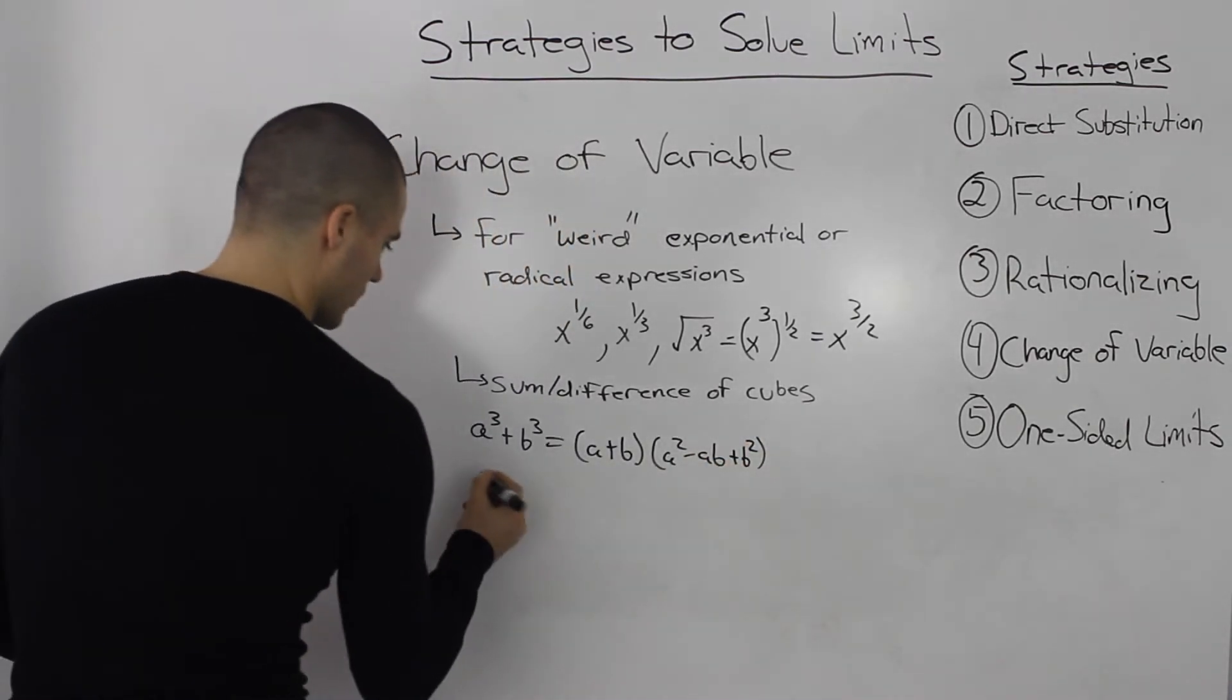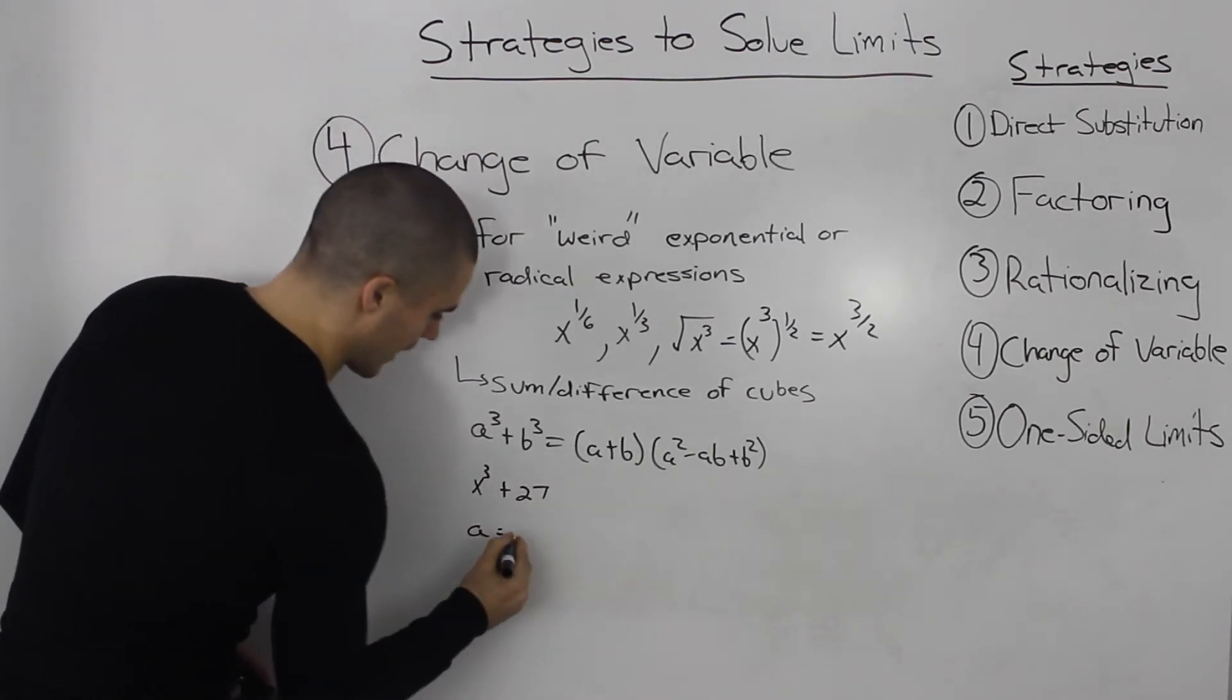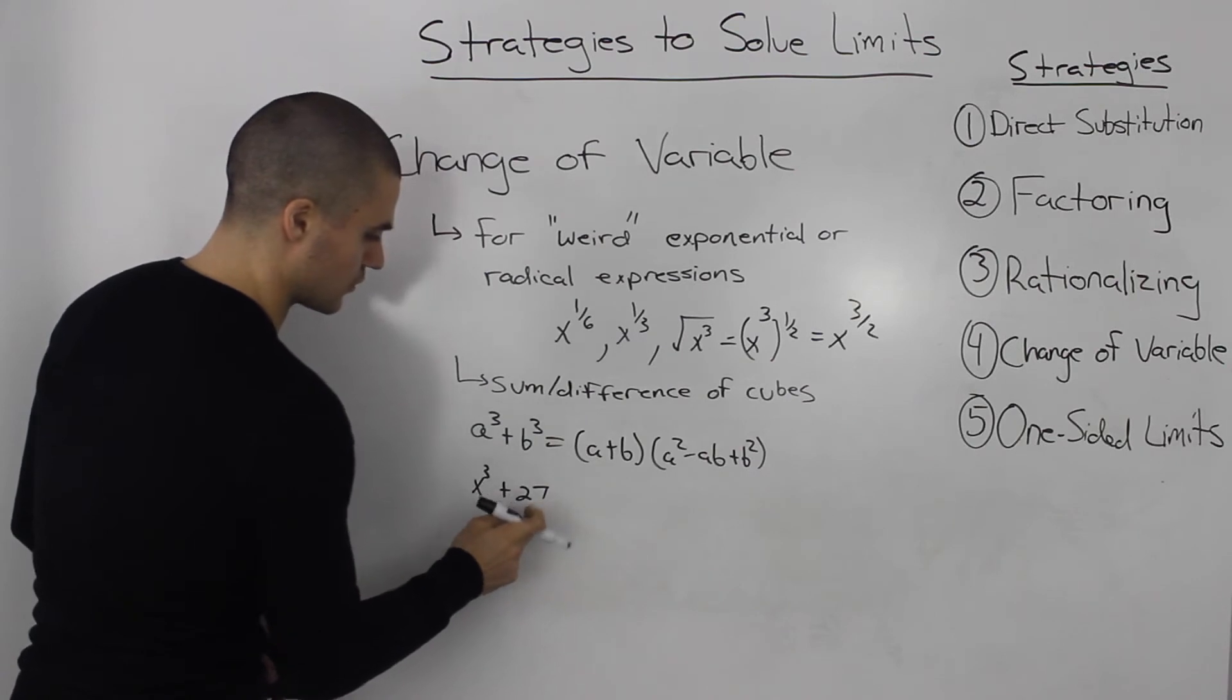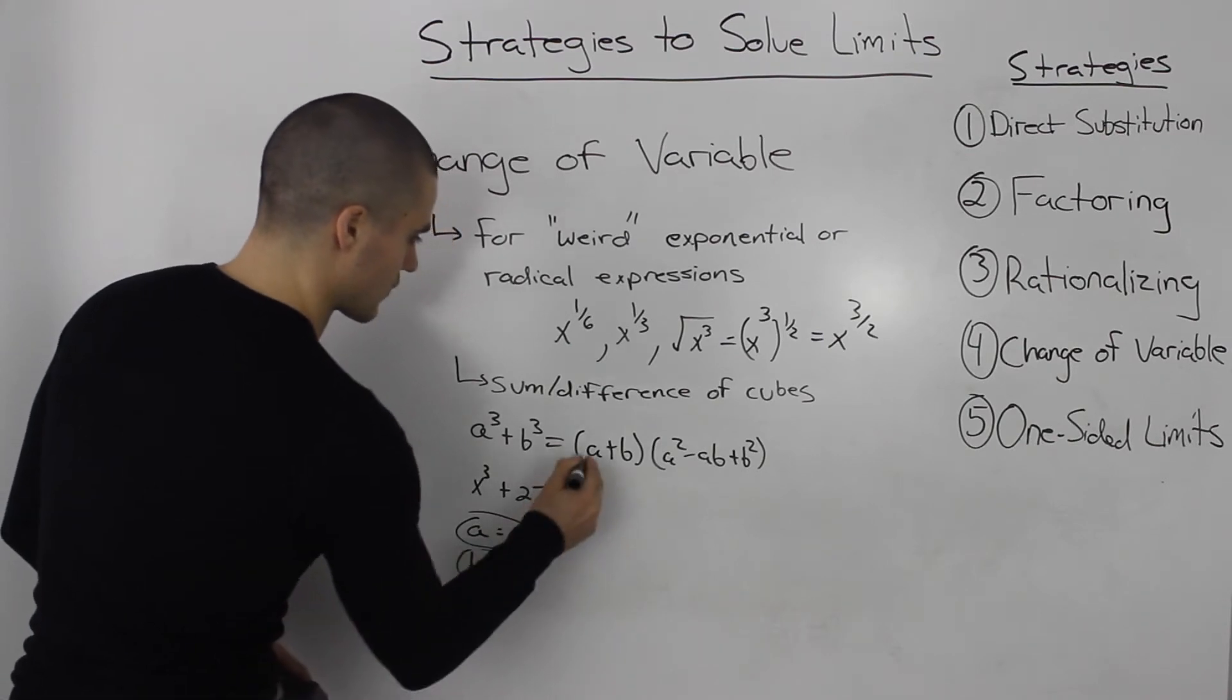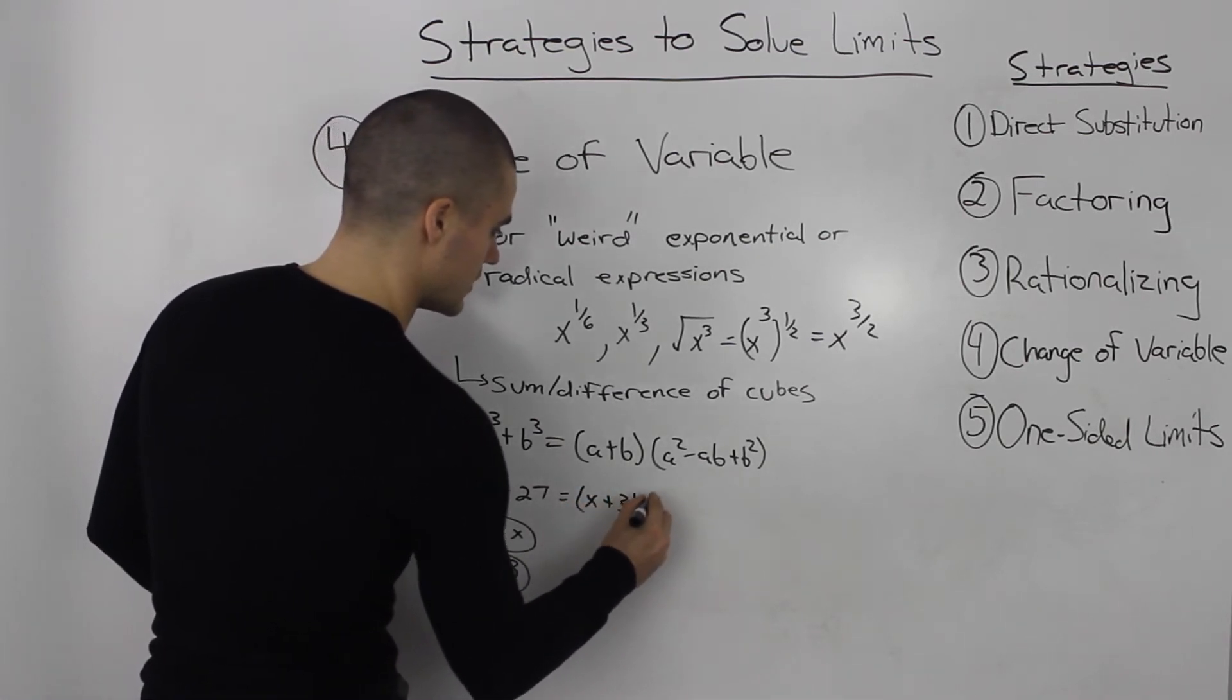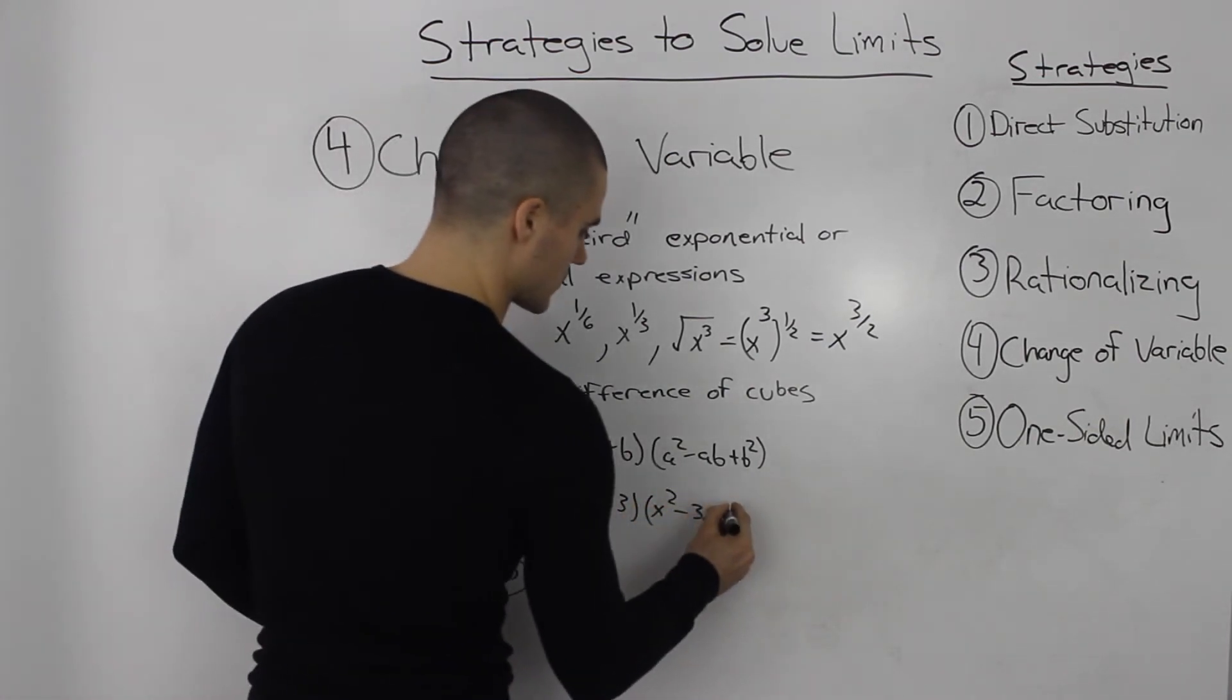So for example, if you're given something like x cubed plus 27, well, you know that your a value is the third root of x cubed, which is just x, and then your b value is just the third root of 27, which is 3. So then plugging these into our formula here, x cubed plus 27 would equal x plus 3 times x squared minus 3x plus 9.